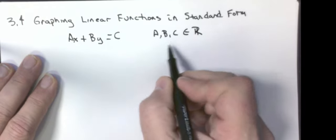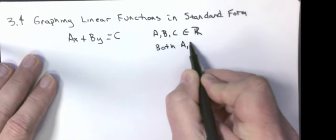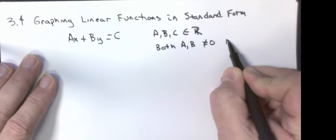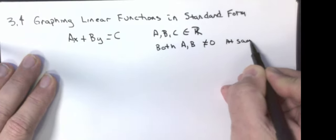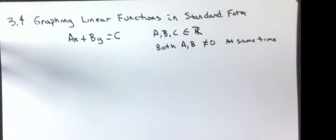The other caveat on here, both A and B not equal to zero at the same time. It's okay for one of them to be zero, but not both of them to be zero.